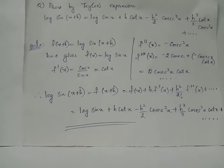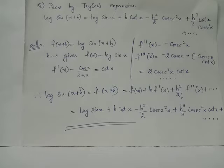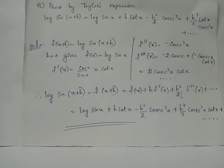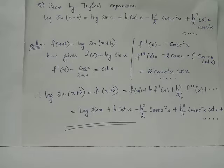We prove that log sin(x + h) equals log sin x plus h cot x minus h squared by 2 cosec squared x plus h cubed by 3 cot x cosec squared x plus etc., using the Taylor series. We have f(x + h) given by log sin(x + h). Therefore, when we set h equals 0, we obtain f(x) equals log sin x.